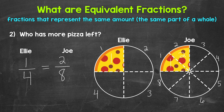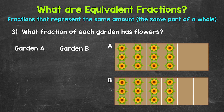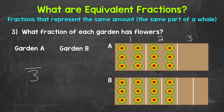Let's take a look at one more example — number three. We have: what fraction of each garden has flowers? We have two rectangular gardens that are the same size, garden A and garden B. The same amount, the same part of each whole garden, is filled with flowers, so we're going to have equivalent fractions. Garden A is divided into three equal sections, so three is our denominator. Two of those sections are filled with flowers, so two is our numerator. Two thirds of garden A is filled with flowers.